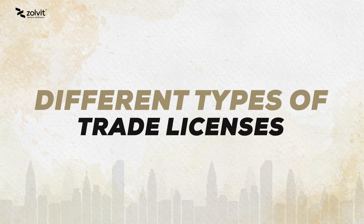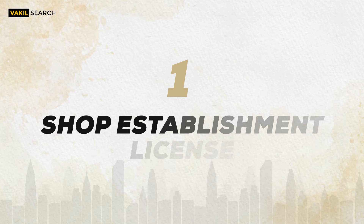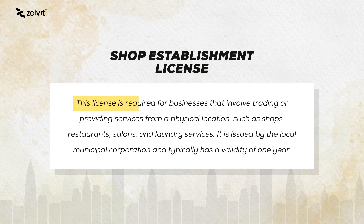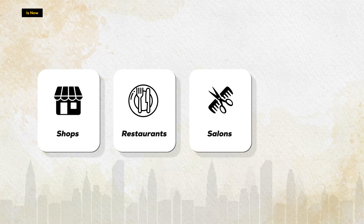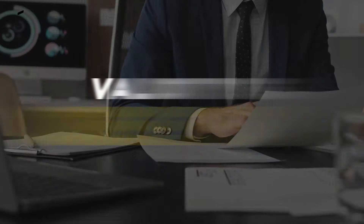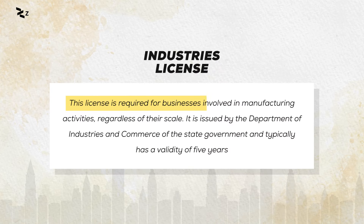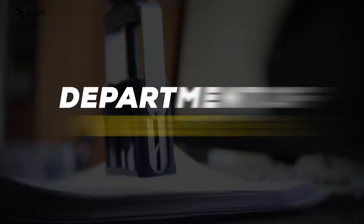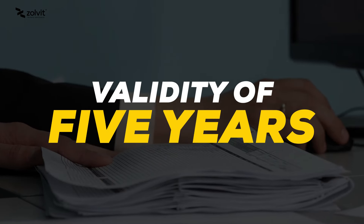There are three main types of trade license, each catering to different business activities. Shop establishment license: this license is required for businesses that involve trading or providing services from a physical location. It is issued by the local municipal corporation and typically has a validity of one year. Industries license: this license is required for businesses involved in manufacturing activities regardless of their scale. It is issued by the Department of Industries and Commerce of the state government and typically has a validity of five years.